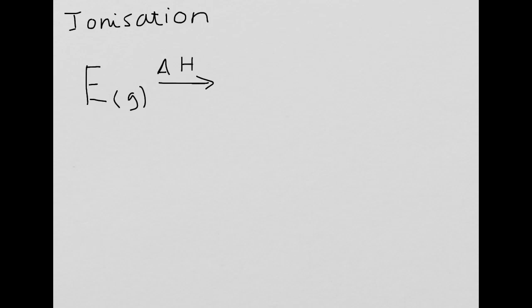The next part is on ionization energies. The definition is: the energy required to remove one electron from each atom in one mole of gaseous atoms to form one mole of gaseous 1+ ions. The equation — which is better to remember — uses E to represent an element: E(g) → E⁺(g) + e⁻, with a delta H value. It always has to be gaseous. This is the first ionization energy.